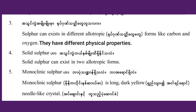Sulfur can exist in different allotropic forms, like carbon and oxygen. They have different physical properties. Sulfur can exist in 3 allotropic forms.